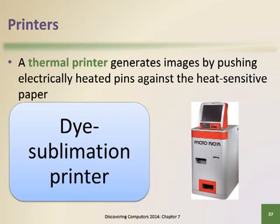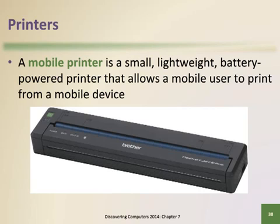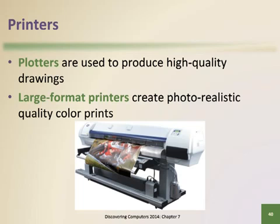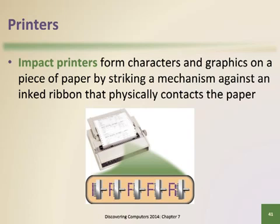A thermal printer operates by pushing electrically heated pins against heat-sensitive paper. Mobile printers are small, lightweight, battery-powered printers for mobile computer users. A label printer is a small printer that prints on adhesive-type material that can be placed on a variety of items. Plotters and large-format printers are used in specialized fields to produce high-quality drawings and large, photorealistic color prints. Impact printers form characters and graphics by striking a mechanism against an inked ribbon that physically contacts the paper. The dot matrix printer and the line printer are two examples of impact printers; images are produced when tiny wire pins on a print head strike an inked ribbon.